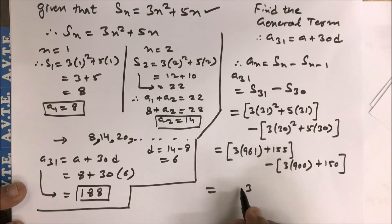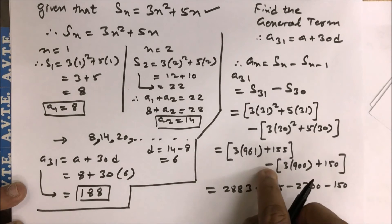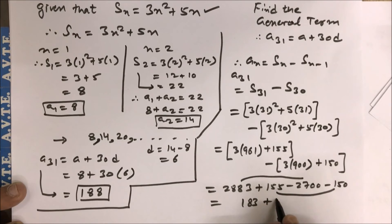This 3 into 961, the square of this, plus 155, minus 3 into 900 plus 150. Now you can open the brackets. This is 2883 plus 155 minus 2700 minus 150, because there's a minus sign here. So you calculate them, this is 3038 plus 5, this is again 188.